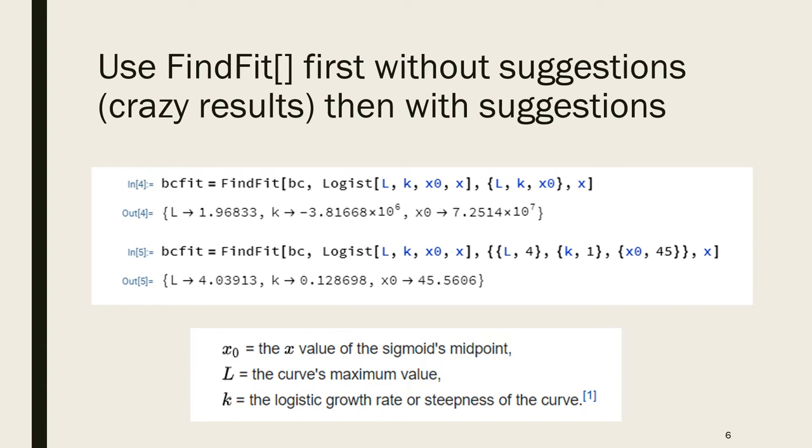This time we have bc equals FindFit. The first argument is the data BC. The second argument is the logist function with L, K, x₀, and X arguments. The third argument identifies the parameters but now we're also giving them starting points: L starting at 4, K starting at 1, x₀ starting at 45. Our last argument is that X is the variable.